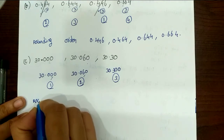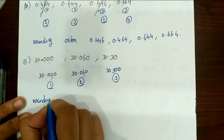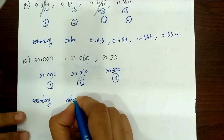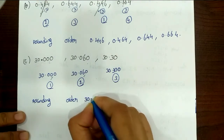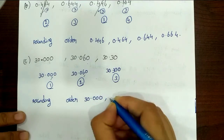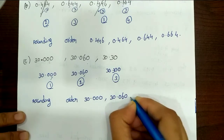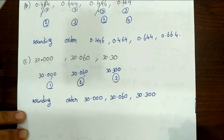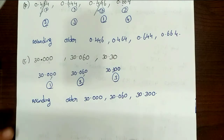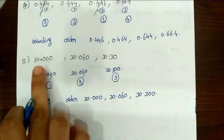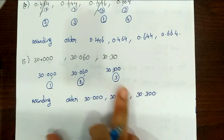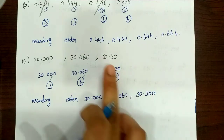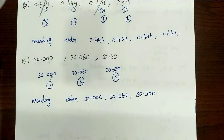So the ascending order is: 30.000 first, next 30.060, then 30.300. Sorry — that is 30.300 with double zero. You can verify these numbers yourself. Now let's move to the 4th problem.